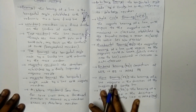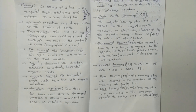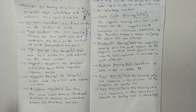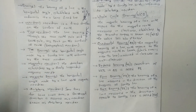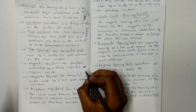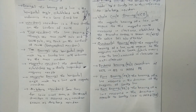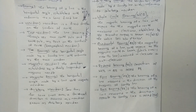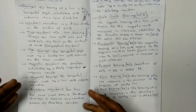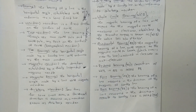Magnetic meridian: the direction established by a freely suspended magnetic needle. If we see a compass, the direction shown by the magnetic needle is the magnetic meridian. If we suspend a magnet freely, it will point in a fixed direction — that is the magnetic meridian.